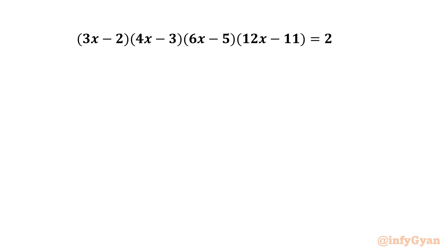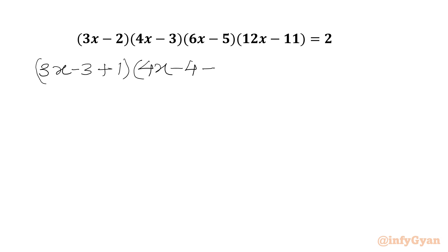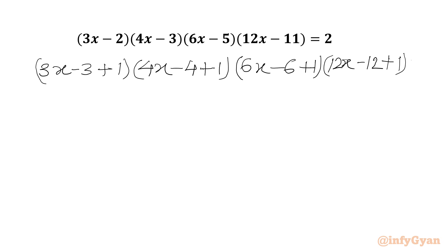I can see 3x minus 2 is written there, 4x minus 3 is written there, 6x minus 5 is there, 12x minus 11 is there. So we can write the equation: 3x minus 2 can be written as 3x minus 3 plus 1. Similarly, 4x minus 3 can be written as 4x minus 4 plus 1. Then for the third bracket, 6x minus 5 we can write 6x minus 6 plus 1. And the last bracket we will write 12x minus 12 plus 1. RHS is 2.